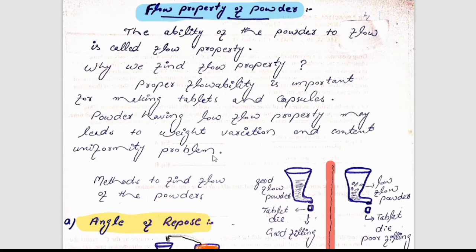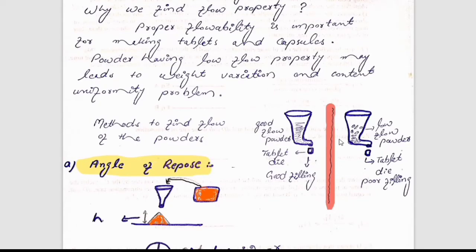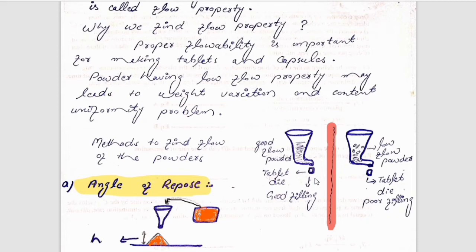Suppose we have powder and we are going to make tablets and capsules, but the powder has low flow property. After making the tablet and capsule we can face weight variation and content uniformity problems. You can see in this diagram — this hopper contains powder having good flow, so there will be good filling of the die. In contrast, if the powder has low flow property, there will be poor filling of the die and we can face weight variation problems.